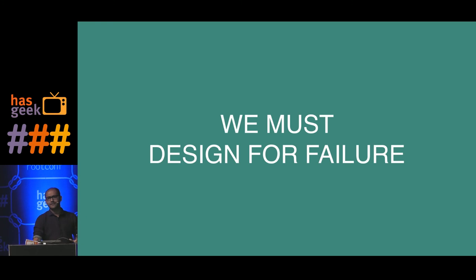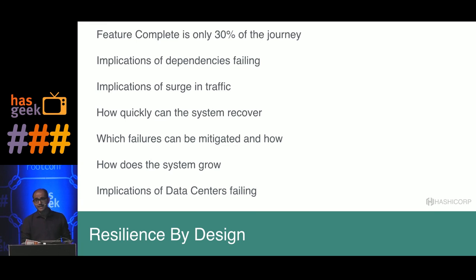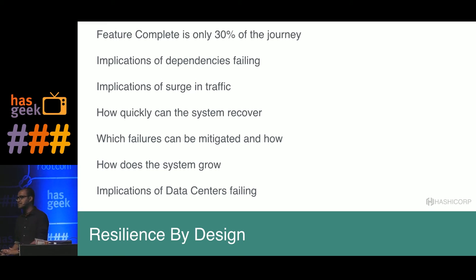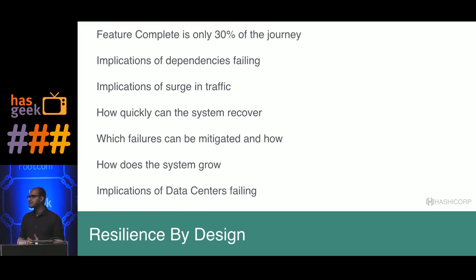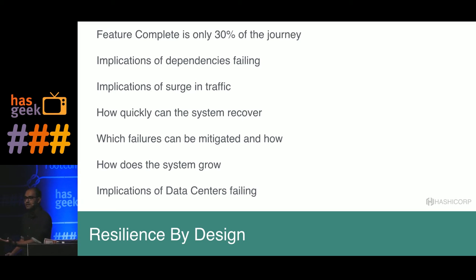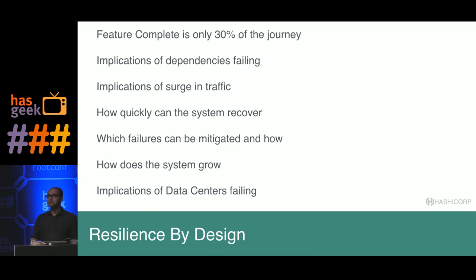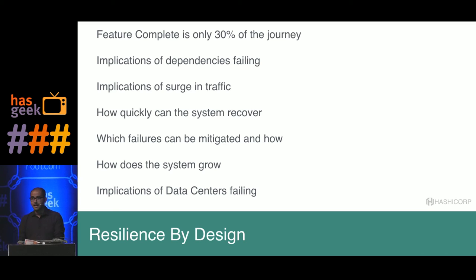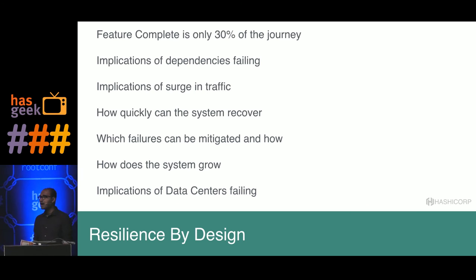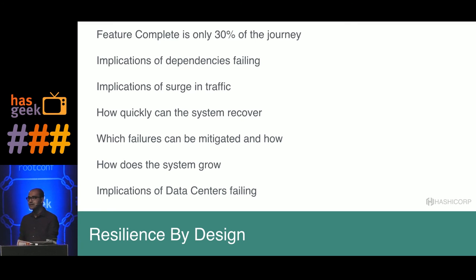We must design for failure — there's no getting around that. Resiliency is by design. 'Feature complete' really doesn't mean anything if you're running a service. Feature complete just means you've finished maybe 1% or 20% of the contract — most of the time and money invested in software is after it goes live, about 60% of the investment. The real questions we should ask are: what are the implications of dependencies failing? Are all network calls isolated so that when a dependency fails, the whole system doesn't go down?